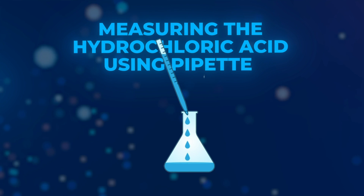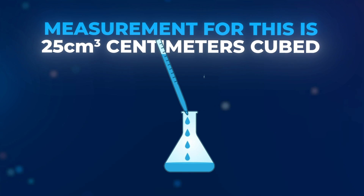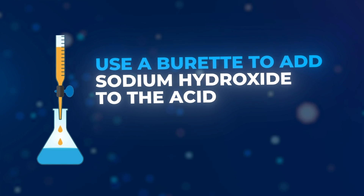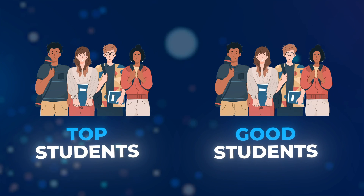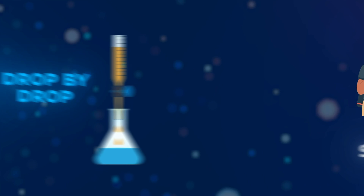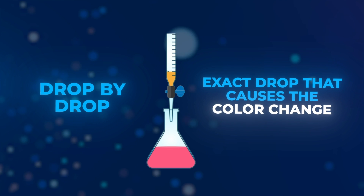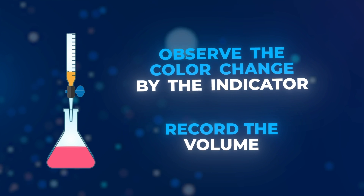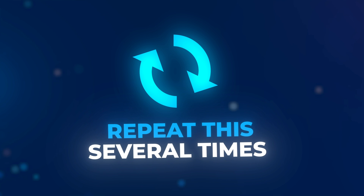Here are the key steps for a titration question. First, measure the hydrochloric acid using a pipette — the usual volume is 25 cm³ — then add it to the conical flask and add a few drops of indicator. Use a burette to add sodium hydroxide to the acid drop by drop, because you want to identify the exact drop that causes the colour change so your measurements are as accurate as possible. Observe the colour change via the indicator, record the volume, repeat several times until you have concordant results, and calculate a mean.